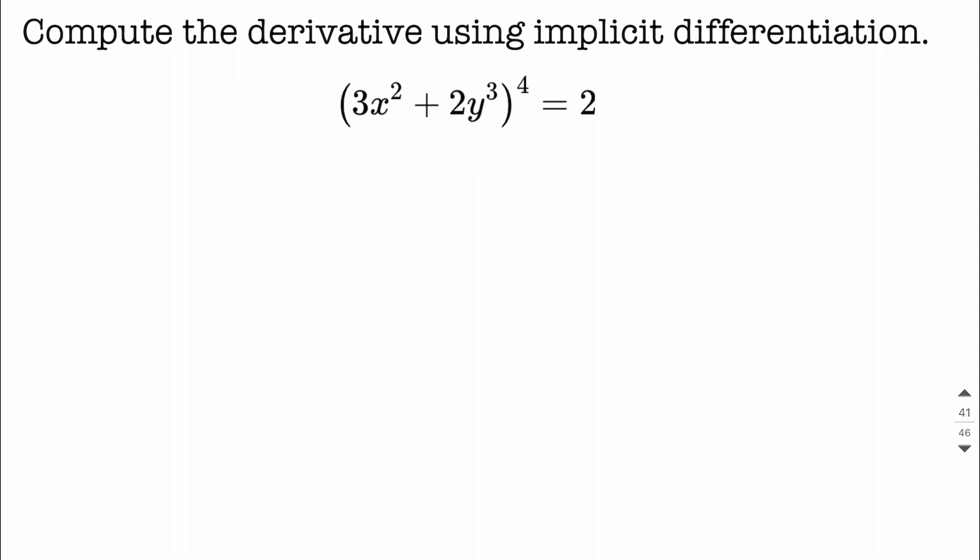The chain rule says we're going to work with the outer function and its derivative first. So that 4 from the exponent is going to come down, we're going to copy down everything on the inside just as it is, then we're going to reduce the exponent by 1. So 4 minus 1 makes 3 for our new exponent.